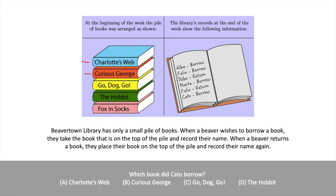Now Felix returns the book he borrowed — Curious George. So Charlotte's Web is the only book still borrowed, and Curious George is now on top of the stack because it was last returned. Now Cato borrows the book at the top of the stack, which was last returned by Felix — Curious George. Therefore, Cato would borrow Curious George, and that would be answer B.